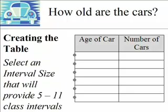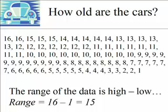When you create a grouped frequency distribution, you want to select an interval size that will provide between 5 and 11 class intervals. This particular table has 6 class intervals. Anything less than 5 makes it hard to identify any real patterns, and anything more than 12 starts to become unwieldy. So somewhere between 5 and 11 is ideal to identify possible patterns in the data.